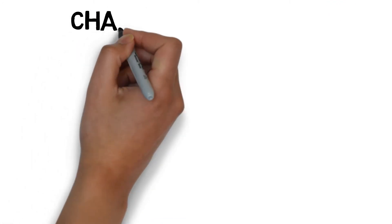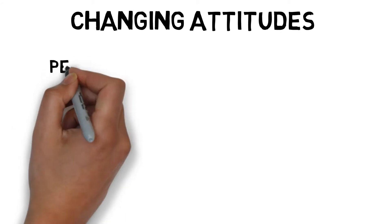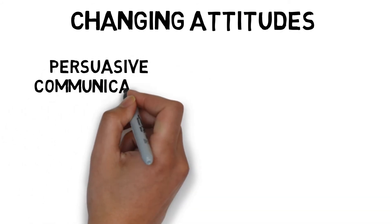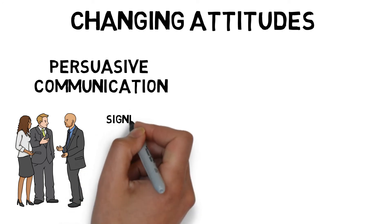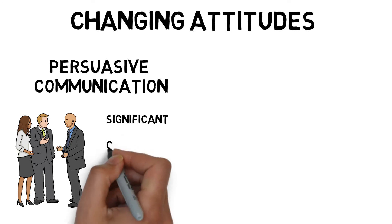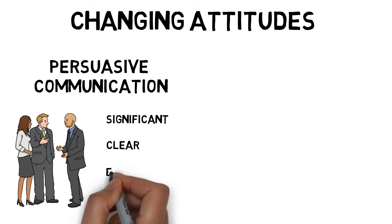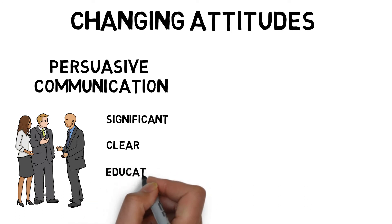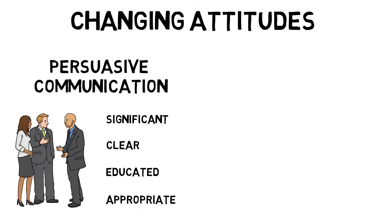It is of course possible to change attitudes, and there are commonly two accepted ways in which to do this. The first is persuasive communication, which is most effective if the persuader is considered significant or has a high status. The message needs to be clear, unambiguous, confident, logical, and appeal to the recipient's sense of fear or failure. The recipient must be educated enough to understand the message, and the message should be given at an appropriate time and within the correct context.